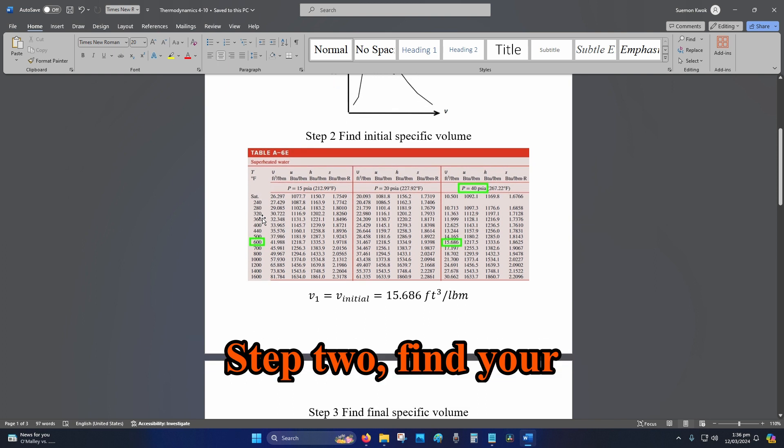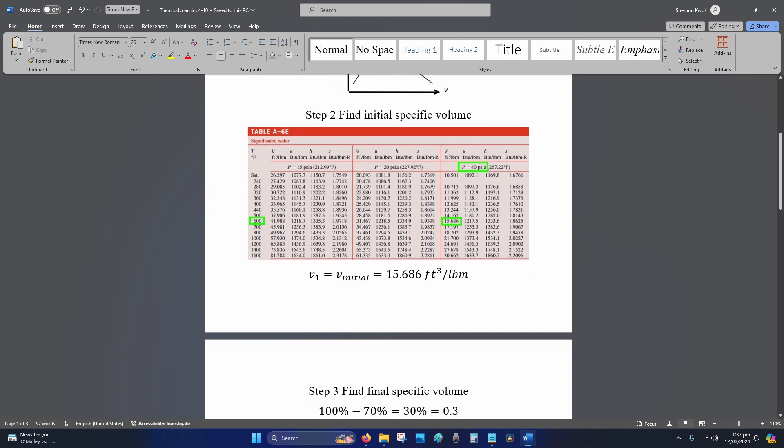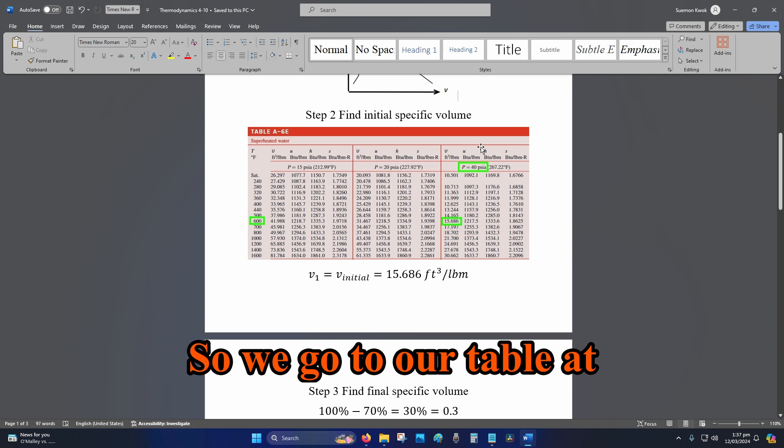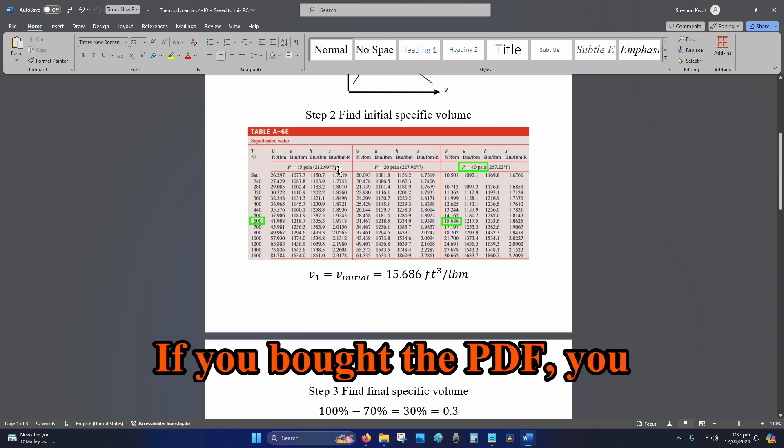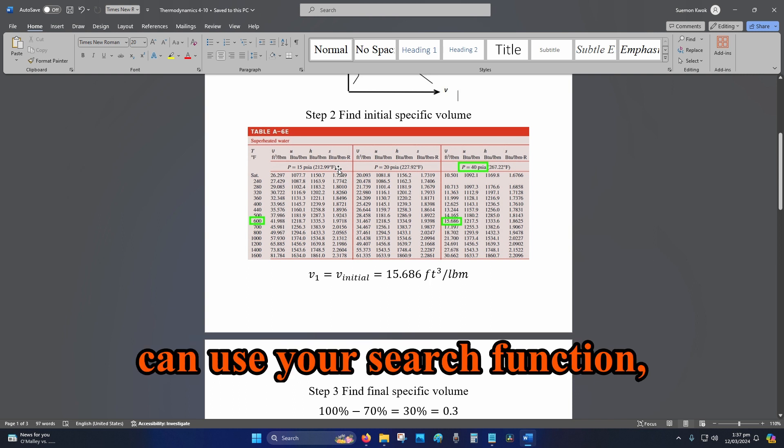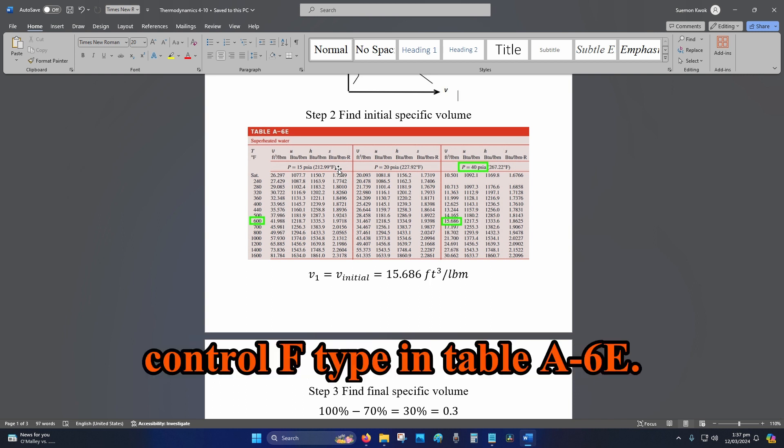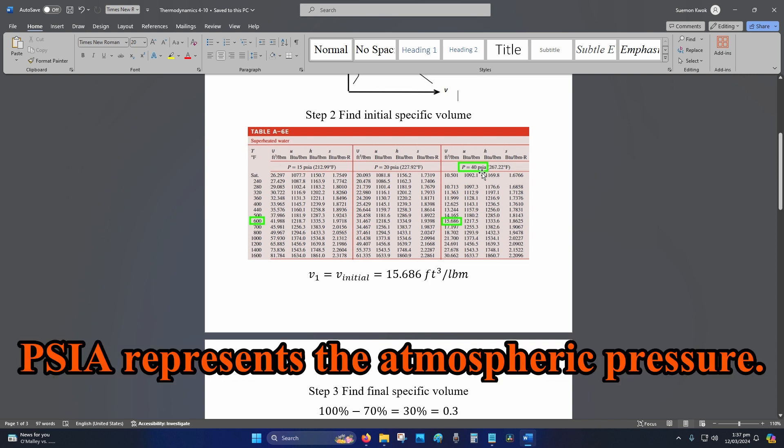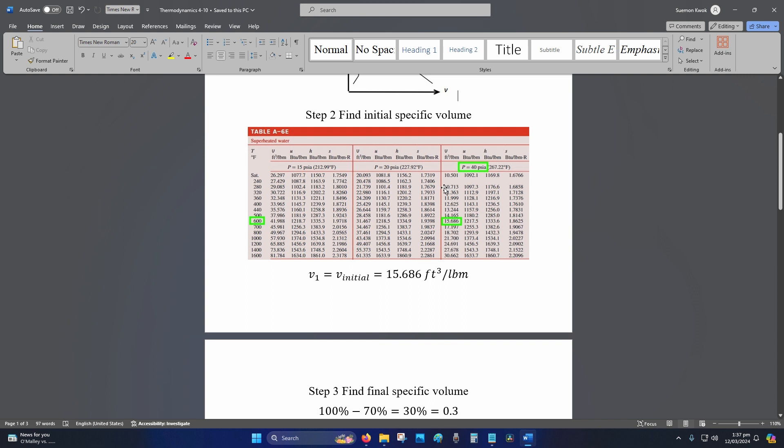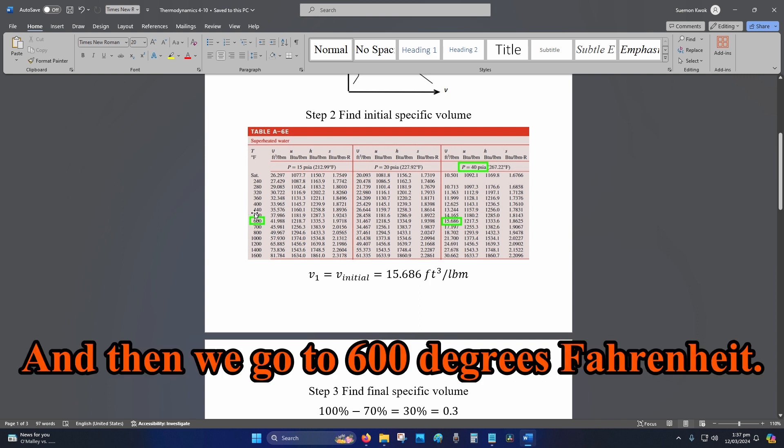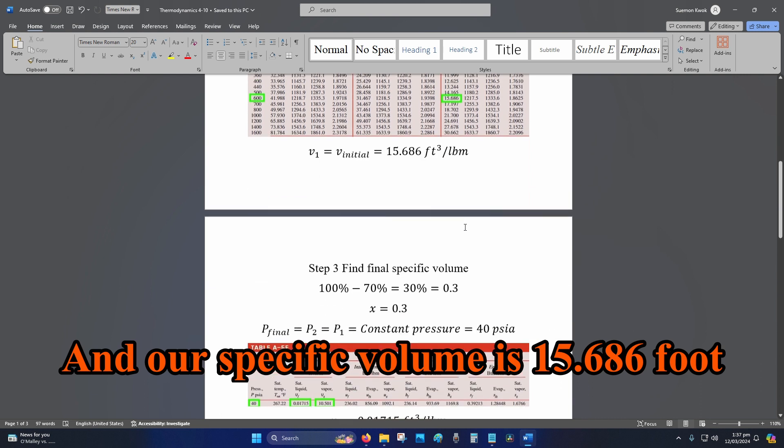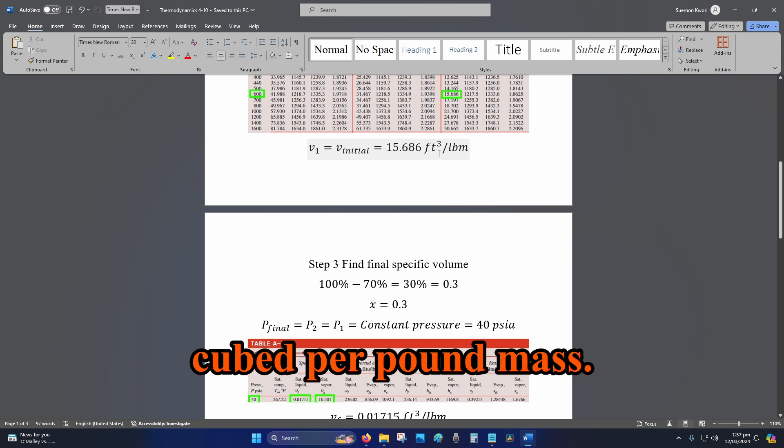Step 2, find your initial specific volume. So little v1 is equal to v initial. We go to our table at the back of our textbook. If you bought the PDF, you can use your search function. Control F, type in table A-6E. We go to 40 psia. Psia represents the atmospheric pressure. Then we go to 600 degrees Fahrenheit, and our specific volume is 15.686 foot cubed per pound mass.